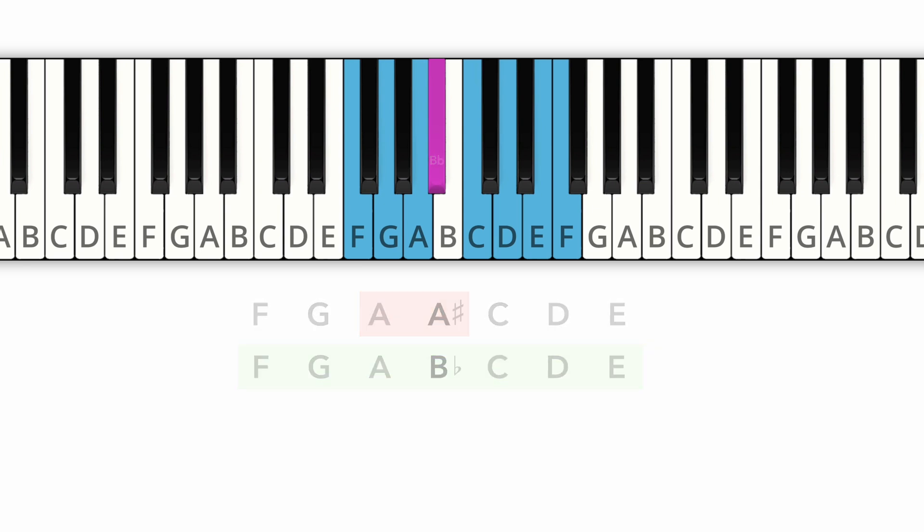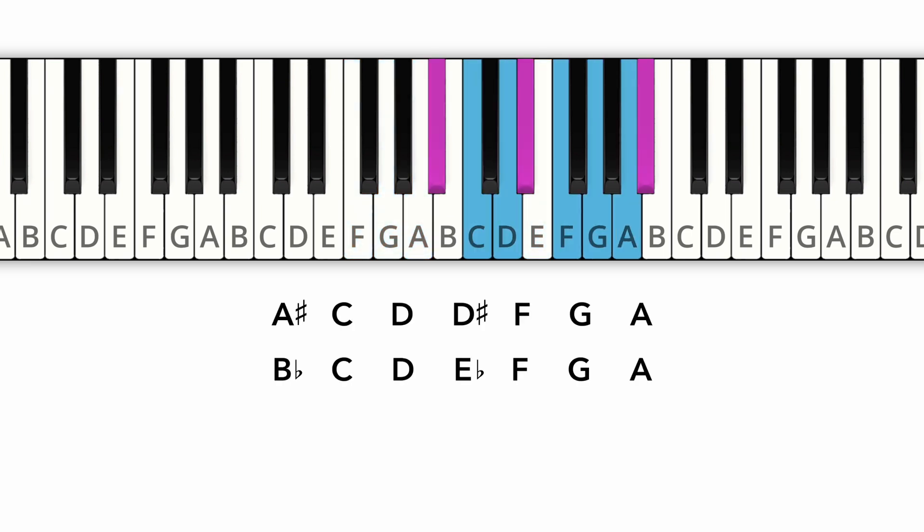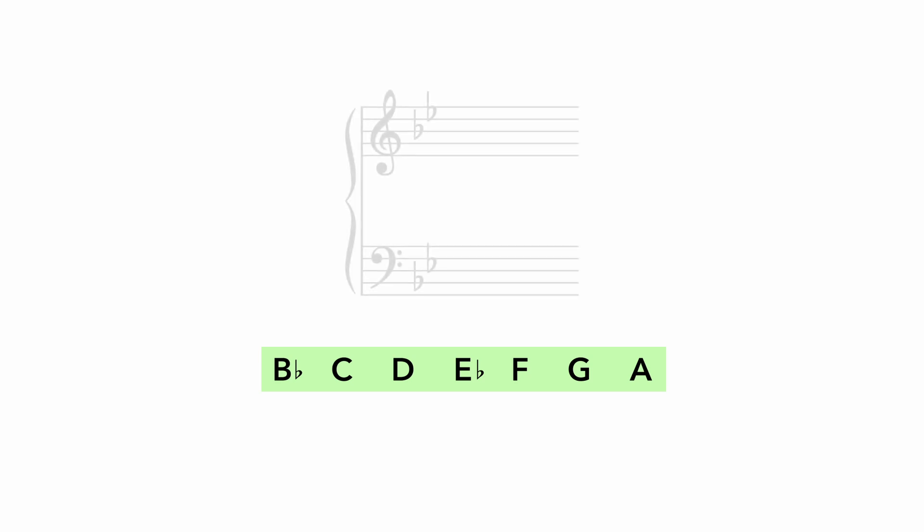Just to give another example, let's play a major scale starting on this black key. Obviously, an A-sharp major scale would contradict our rule in several places, so we need to call this a B-flat major scale. And the key of B-flat major therefore has two flats in its key signature.